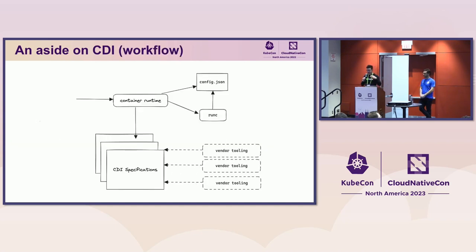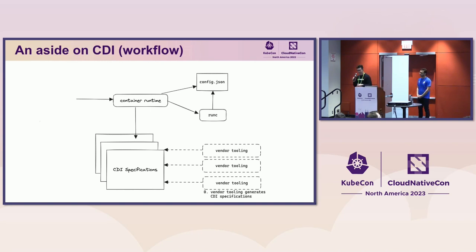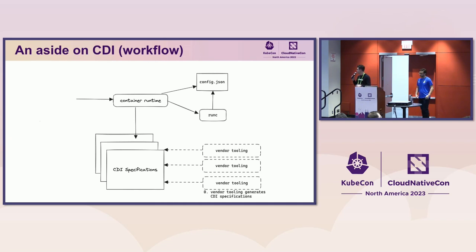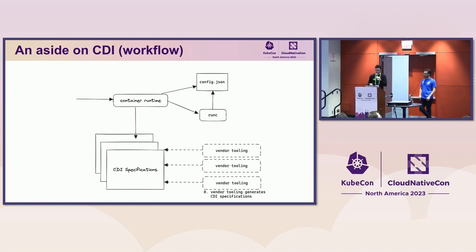In terms of how CDI works: vendors generate CDI specs using vendor tooling. This tooling could be run once-off as a static config — if you know everything about your device a priori, you generate the specification and place it on your node. It can also be generated dynamically for more complex scenarios.